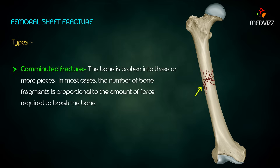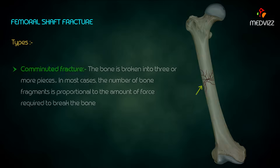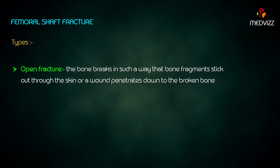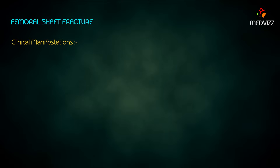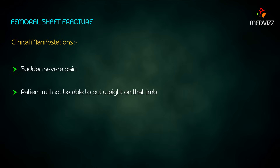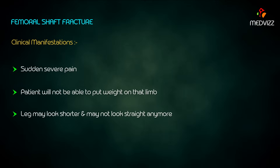Comminuted fracture is when the bone is broken into three or more pieces; the number of bone fragments is generally proportional to the amount of force required. Open fracture is when the bone breaks such that bone fragments stick out through the skin or a wound penetrates down to the broken bone. Clinical manifestations include sudden severe pain; the patient will not be able to put weight on the limb, and the leg may look shorter and may not look straight.